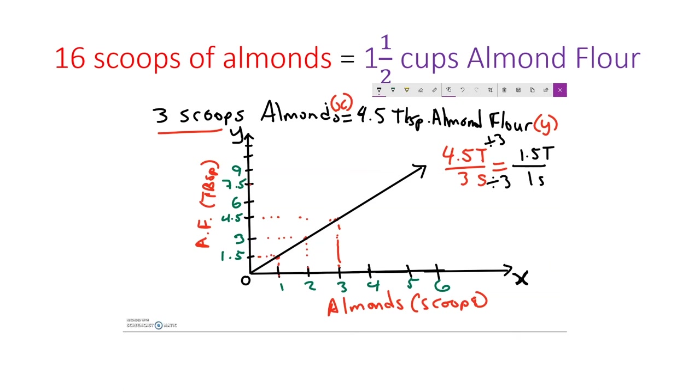We took our almond flour problem, and we looked at it using ratios, using a ratio table with the tablespoons to cups. Then we used the proportional relationship of scoops of almonds to tablespoons of almond flour. And finally, we graphed it. And we could actually extend this graph if we wanted to solve the problem of 24 tablespoons of almond flour. We would see where it would intersect the line for the number of almonds that we would get.